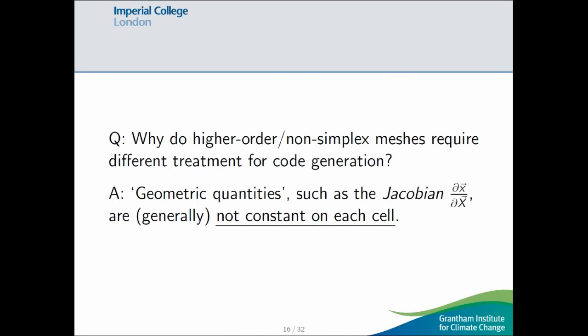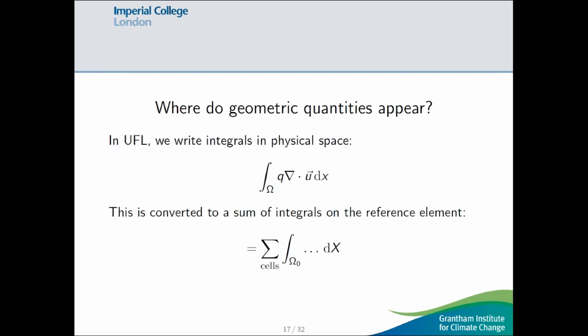So, the next few minutes are going to be like a very quick introduction through isoparametric. So, for those of you who are familiar with this already, please do bear with me. Why do higher-order and non-simplex meshes require different treatment, especially for code generation within Phoenix? Well, the geometric quantities, such as the Jacobian of the coordinate transformation, are no longer constant on each cell.